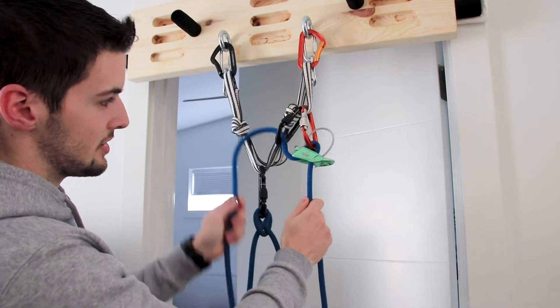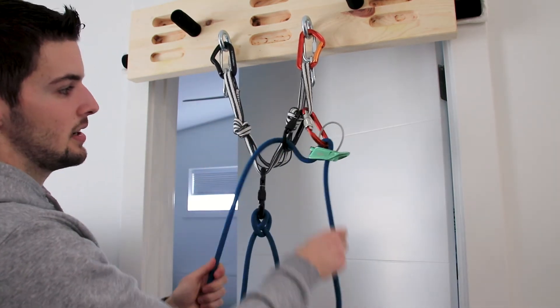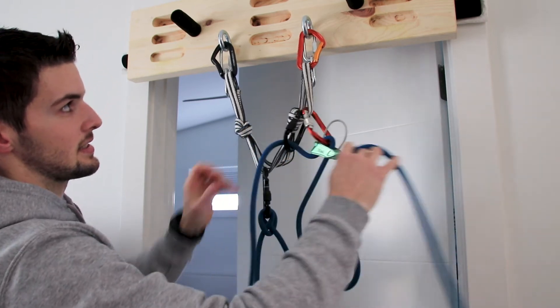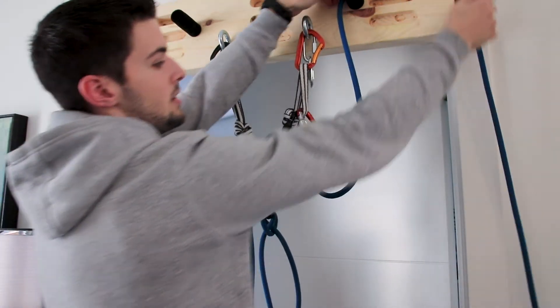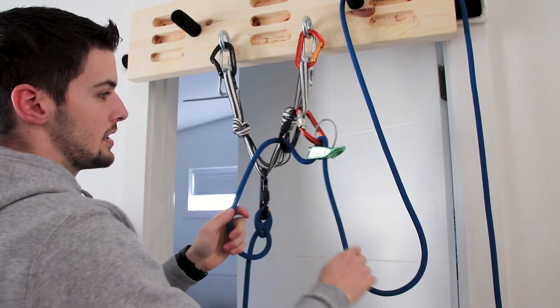To belay, they'll just feed some of the brake rope up and pull down on the climber side. As the climber climbs up you can continue feeding them slack as they go.